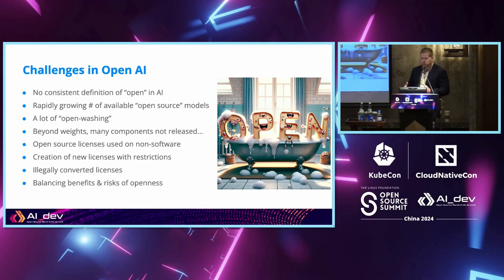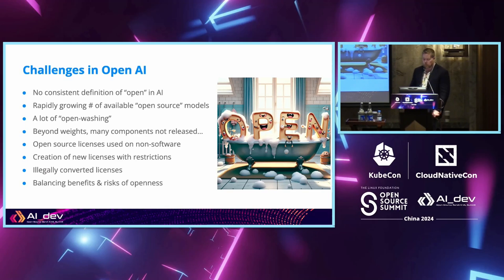The other challenge is transparency with all these new models being published very quickly. They are usually only releasing the model architecture and a final set of weights, but not releasing any intermediate weights or checkpoints, not releasing the code used to train the model, the hyperparameters, or the datasets. We're also seeing licenses developed that purport to be open but are not — they use the word 'open' but have key restrictions that limit usage.